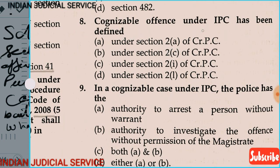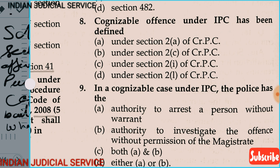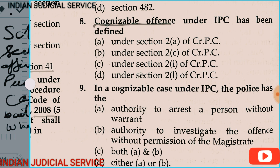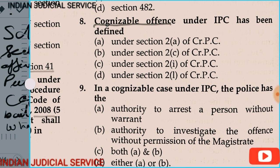Question 8: The cognizable offense under CrPC has been defined under which section? The options are: Section 2(a), Section 2(c), Section 2(i), or Section 2(l) of CrPC. The correct answer is Section 2(c) of CrPC.